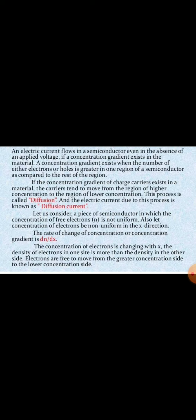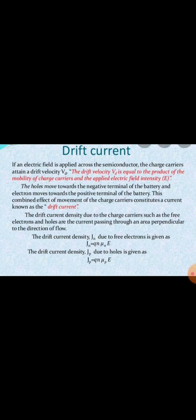In a piece of semiconductor, free electrons are not uniform — the concentration of electrons varies along the x direction, represented as dn/dx. Drift current density is equal to the product of mobility of charge carriers and the applied electric field. In drift current, holes move towards the negative terminal of the battery and electrons move towards the positive terminal. The combined effect of this movement constitutes the drift current. To understand drift current, we must assume an electric field applied to the semiconductor.